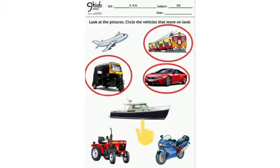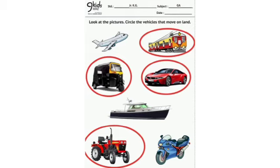Now tell me which vehicle is this? This is a boat. And does boat move on land? No. So we will not circle it. Now which vehicle is this? This is a tractor. And tractor also moves on land. So we will circle it.